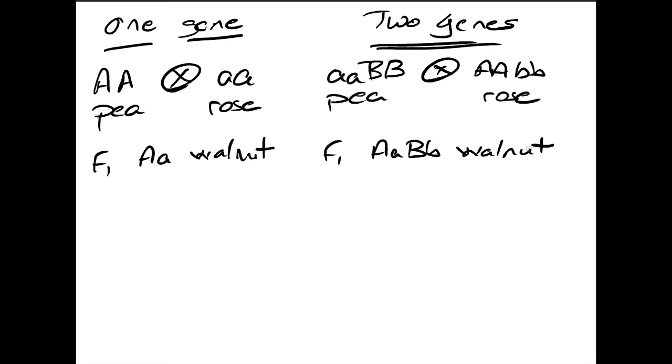So in either case, one or two genes, we can get the phenotype seen in the F1 generation. But it is the F2 generation that we need to look at in each case. If it is one gene, we will see this outcome in the F2. But there are only three possible phenotypes.